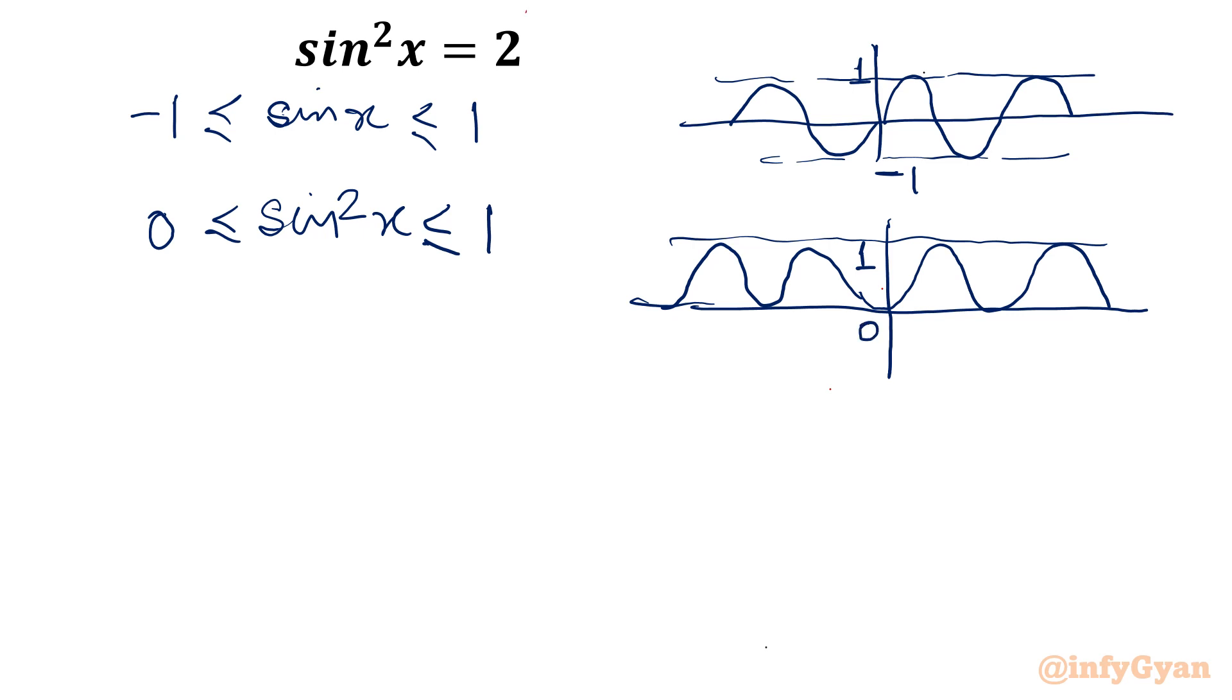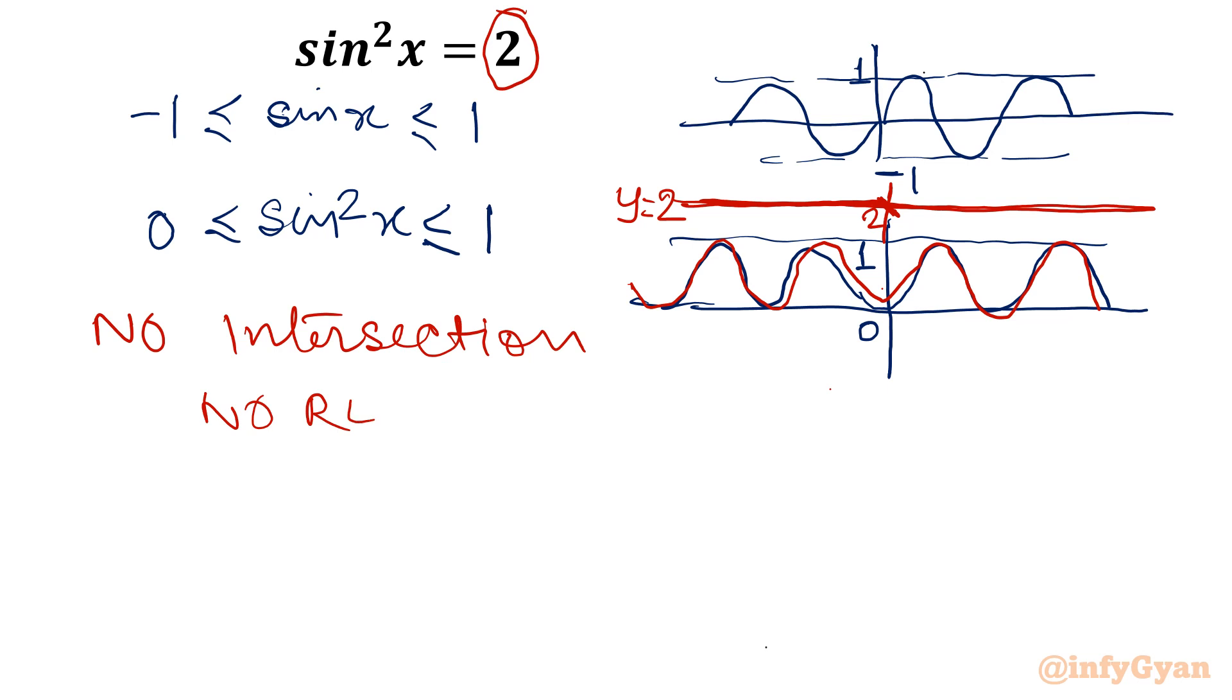Now just observe the right hand side. It is 2. A line which is parallel to the x-axis intersecting the y-axis at 2. Now you can see the left hand side we have a function which is between 0 and 1. This is our graph of the left side, and the right side we have this horizontal line which is having y-intercept 2. So no real intersection. So no real solution. This is what we will conclude. One thing is clear, no real solution. So we will talk about complex solutions.